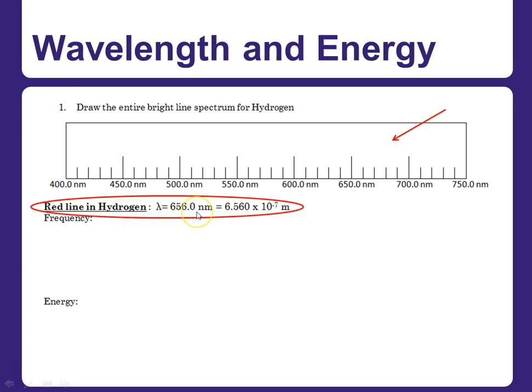And you're given the red line in hydrogen has a wavelength of 656.0 nanometers. And that comes from page two of the lab. There's a table. And so I've gone ahead and converted nanometers into meters. So it's 6.560 times 10 to the minus 7 meters. And what we're going to do is we've picked out the one line, which was around here.